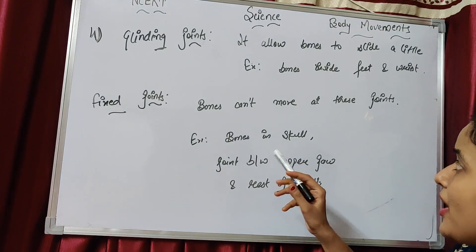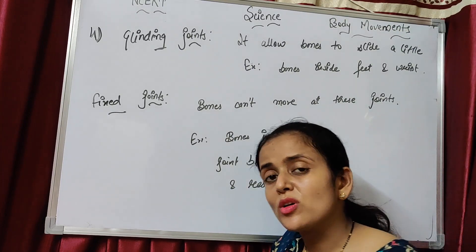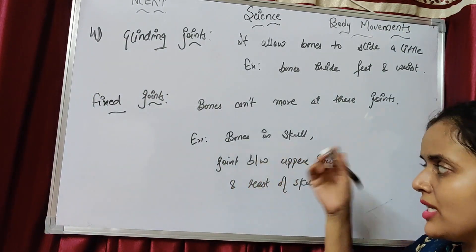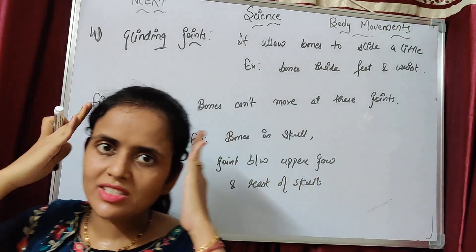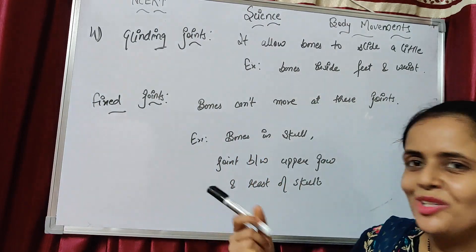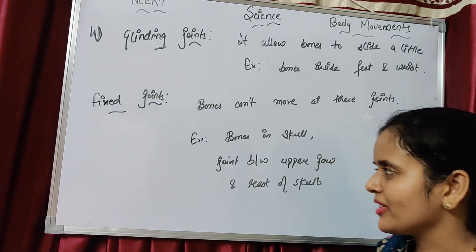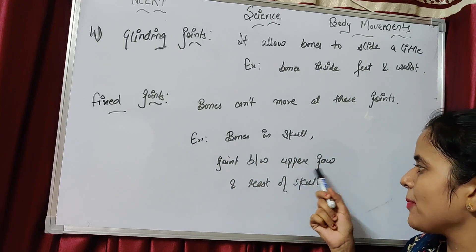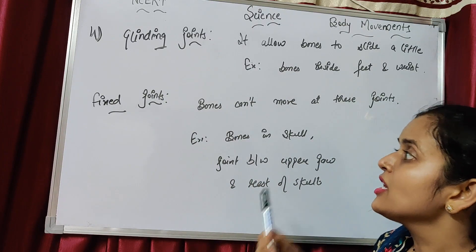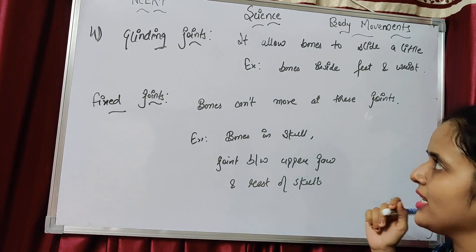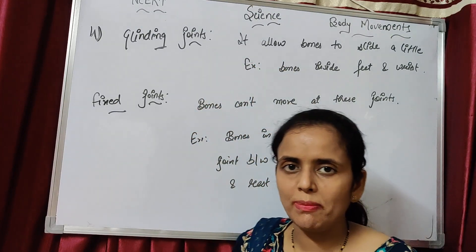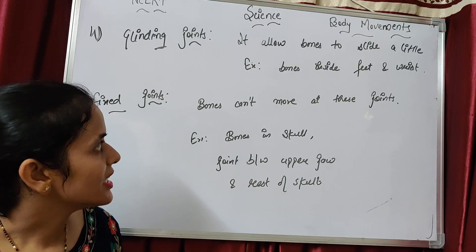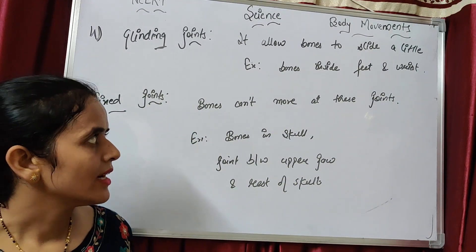The next topic is fixed joints. At fixed joints, bones cannot move at all — they do not allow any movement. Example: the bones of the skull and the joint between the upper jaw and the rest of the skull. There is no movement in our skull. So, fixed joints versus gliding joints: fixed joints allow no movement at all, while gliding joints allow a slight slide. That is enough for today. Tomorrow we will discuss further topics. Thank you.